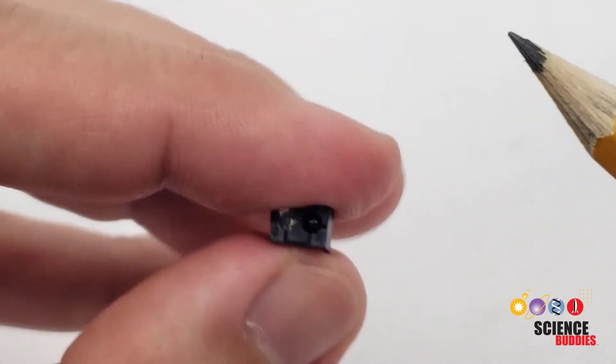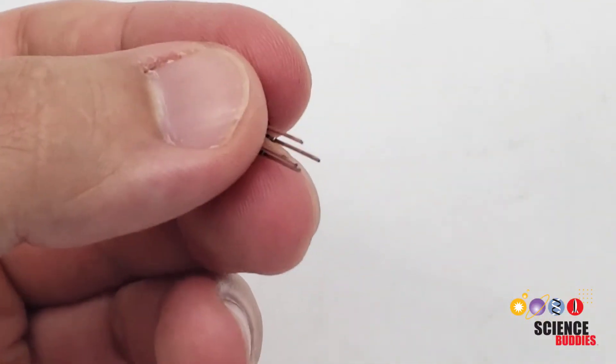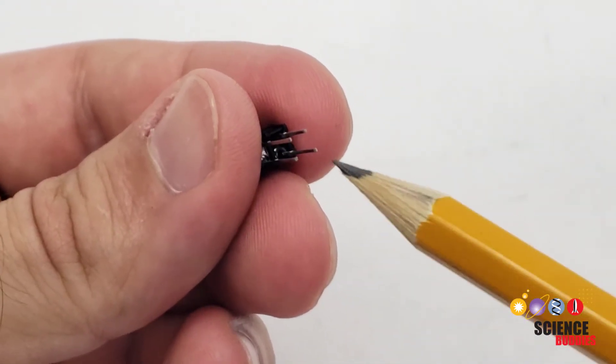So that is going to be important because you don't want to get the sensor flipped 180 degrees when you are connecting it. You need to make the correct connections to all of these pins when you are building your circuit.